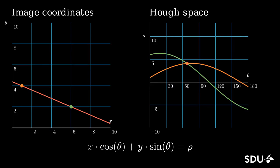By using this trick with more than just two points, it is possible to detect straight lines in image coordinates by taking all the image coordinates, adding their associated curves to the Hough space, locating peaks in the Hough space, and then going back to the image coordinates.